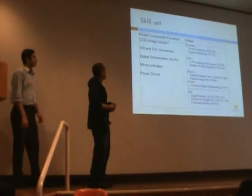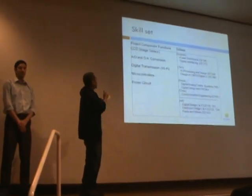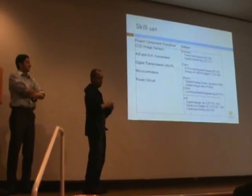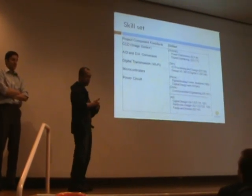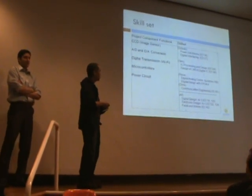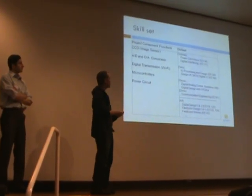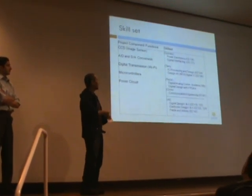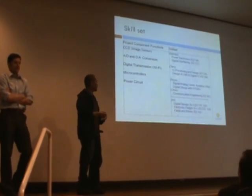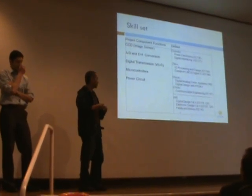Our project includes the following major components: a CCD, which is basically an image sensor. Our project is also using analog to digital and digital to analog conversion. We're also using digital transmission and RF for Wi-Fi. We also have a microcontroller to tie everything together, and we'll make a PCB circuit. These are some of the technical activities we've taken: power electronics, CMOS design, programming with FPGAs, communication engineering, and basic courses in design tools.